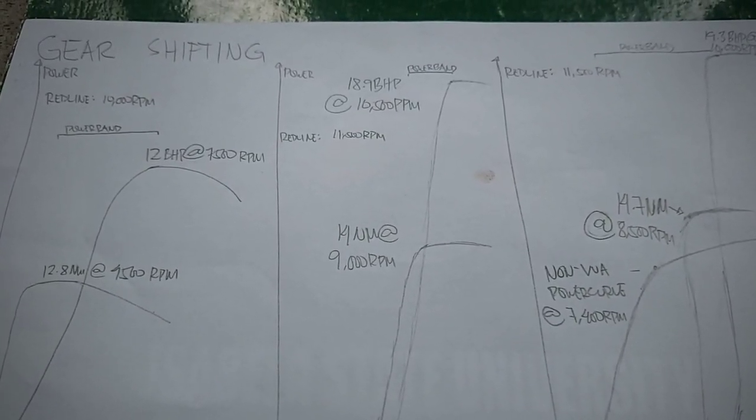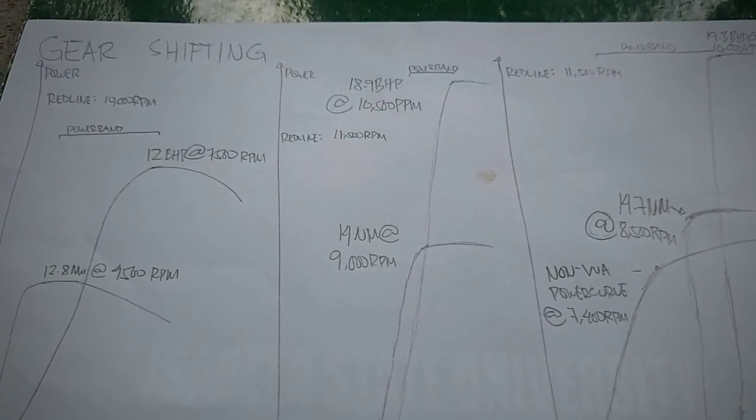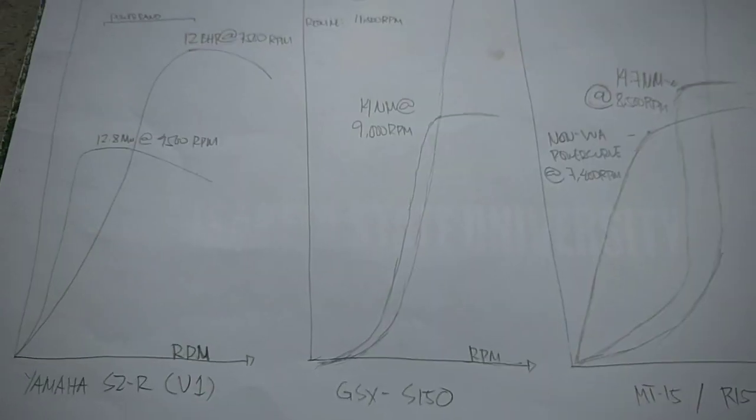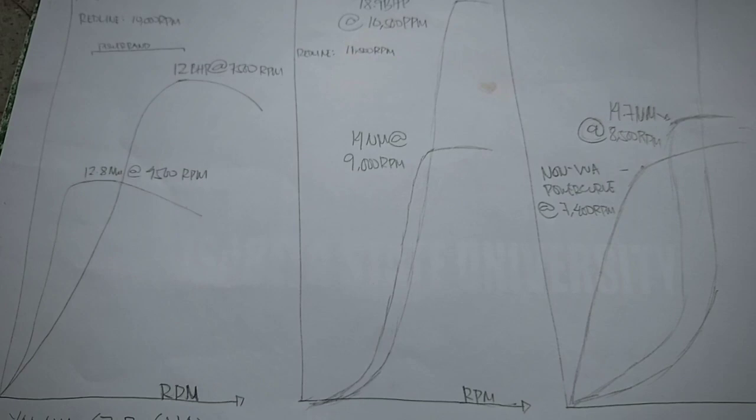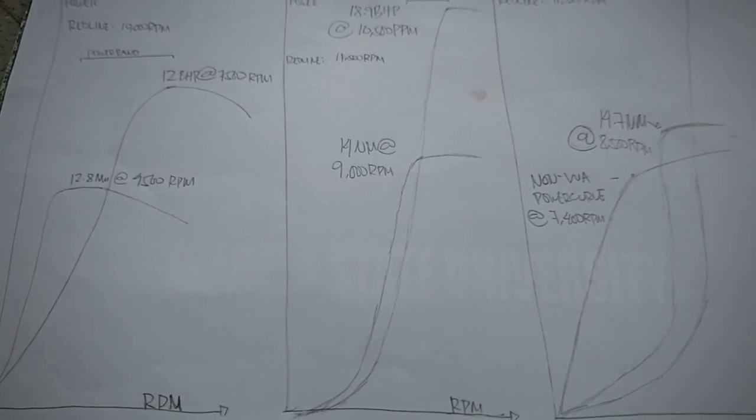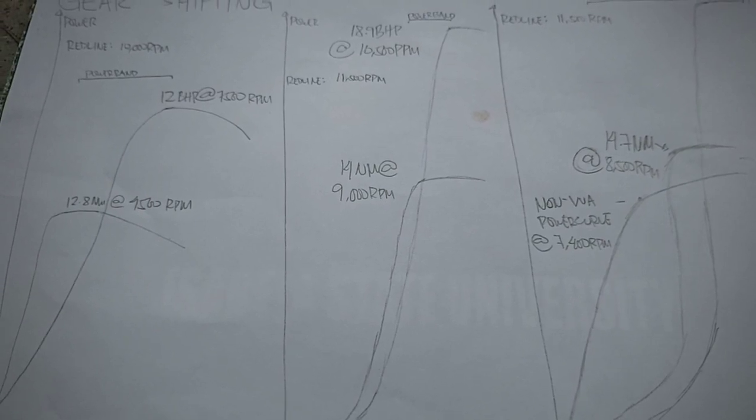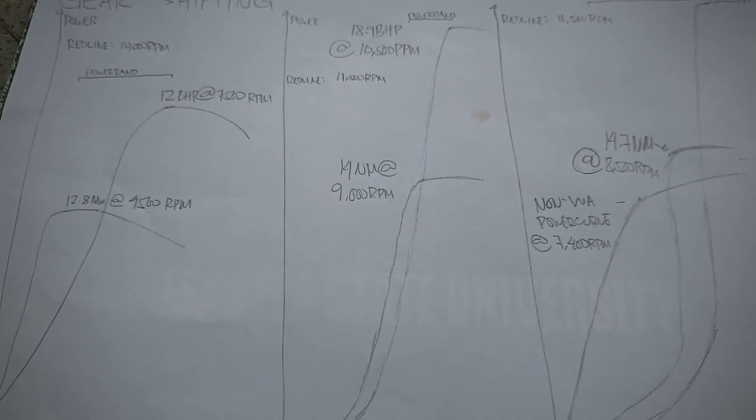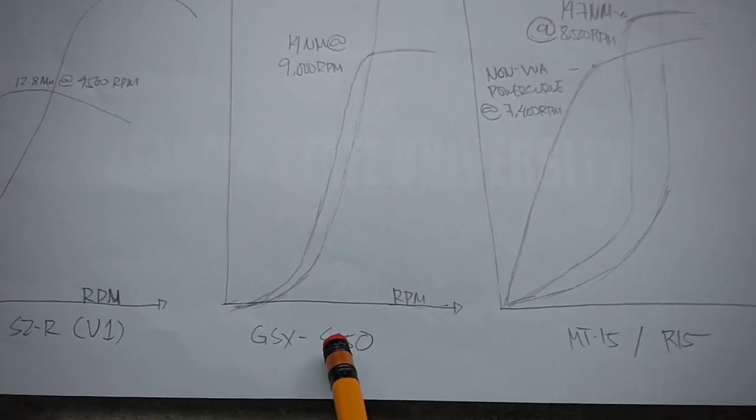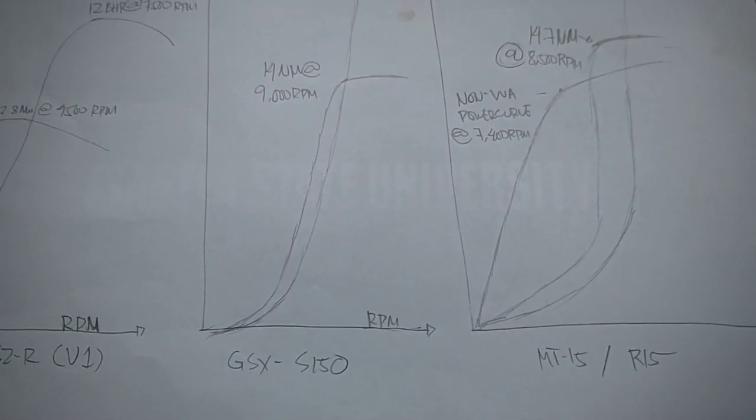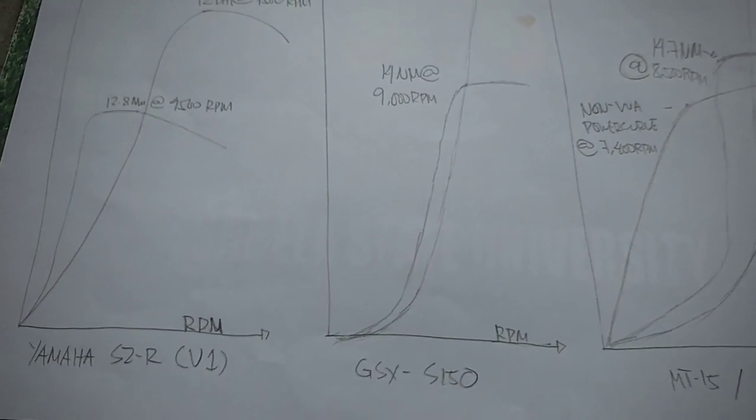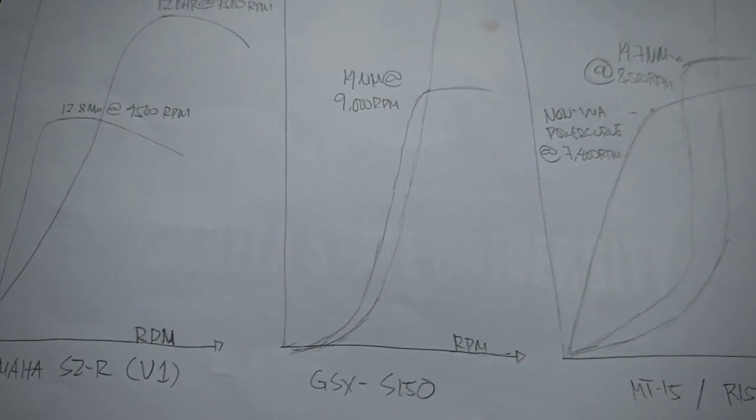So before we talk about gear shifting, una sa lahat kailangan matutunan natin yung power curves ng mga motor natin. Para maintindihan natin yung iba't ibang klase ng motor at iba't ibang klase ng behavior nila, nag-set ako ng tatlong example na nagpapakita ng power curves ng isang low revving na motor, isang high revving na motor, at isang VVA na motor. Before we get into that, what actually defines a low revving bike, a high revving bike, and a VVA bike?